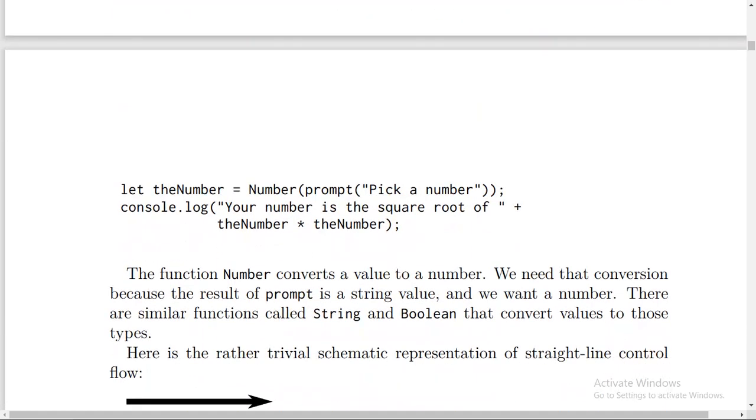Let theNumber equal Number, then prompt it, pick a number, and console.log your number is the square root of theNumber multiply theNumber, then semicolon. The function Number converts a value to a number.